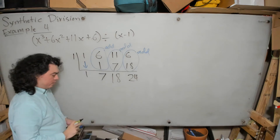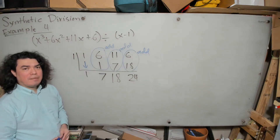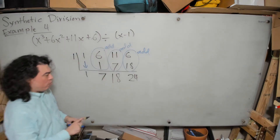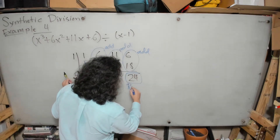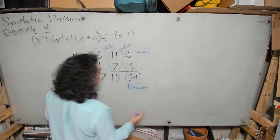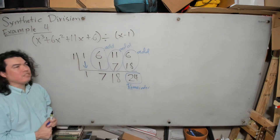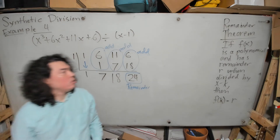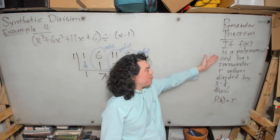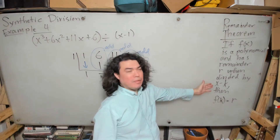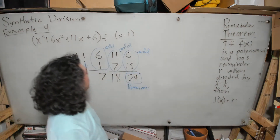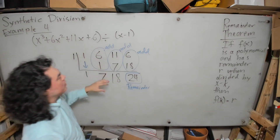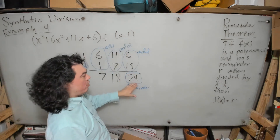Look at this — what does this tell us? This is an example where we're dividing this polynomial by that polynomial and we have a remainder of 24. This is our remainder. The remainder theorem says: if f of x is a polynomial and has remainder r when divided by x minus k, then f of k equals r. Here we have x cubed plus 6x squared plus 11x plus 6 divided by x minus 1, giving a remainder of 24.